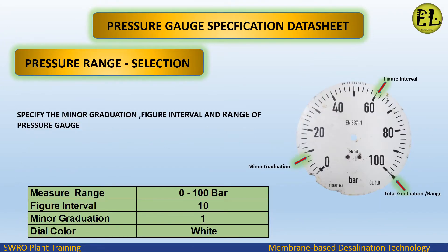Pressure range selection — specify the minor graduation, figure interval, and range of the pressure gauge. For example: measuring range 0 to 100 bar, figure interval 10, minor graduation 1, dial color white, pointer color black.